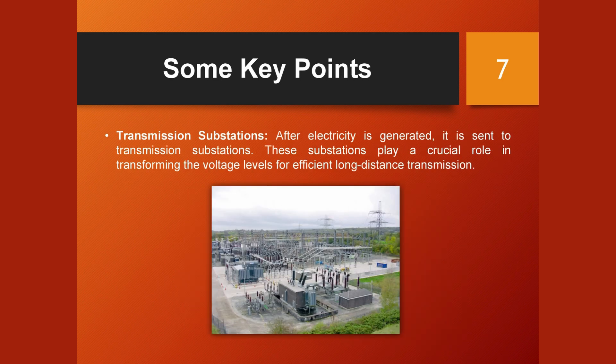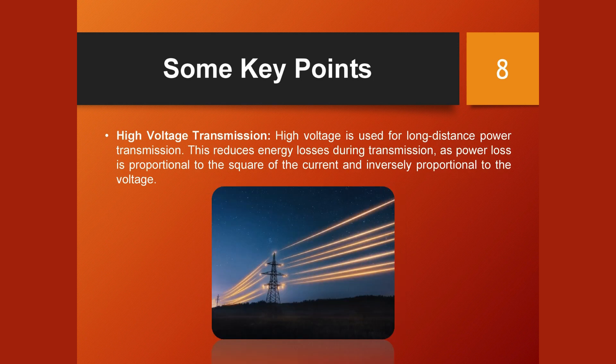After electricity is generated, it is sent to transmission substations. These substations play a crucial role in transforming the voltage levels for efficient long-distance transmission. High voltage is used for long-distance power transmission, as this reduces energy losses — power loss is proportional to the square of the current and inversely proportional to the voltage.